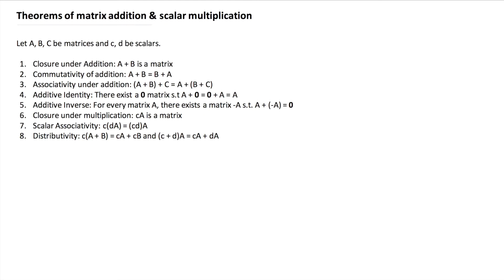In this lecture, I wanted to take you through some of the theorems of matrix addition and scalar multiplication. You can assume A, B, C to be matrices and C and D scalars. I won't be giving you the proofs of each and every theorem here, so I would urge you to take examples on your own and convince yourself that each of these theorems listed below is indeed true.